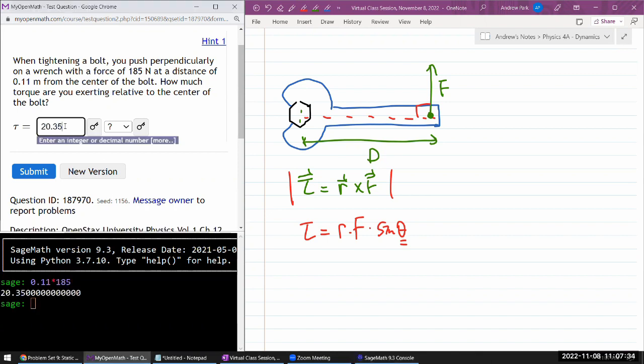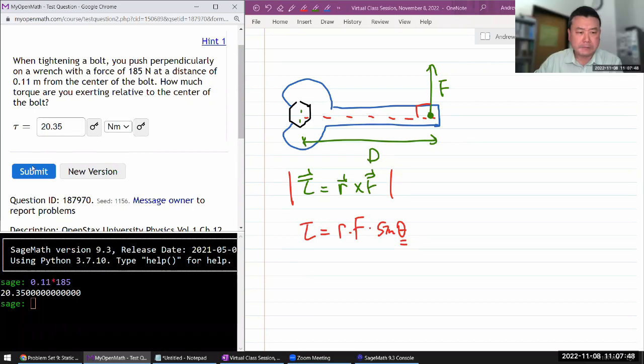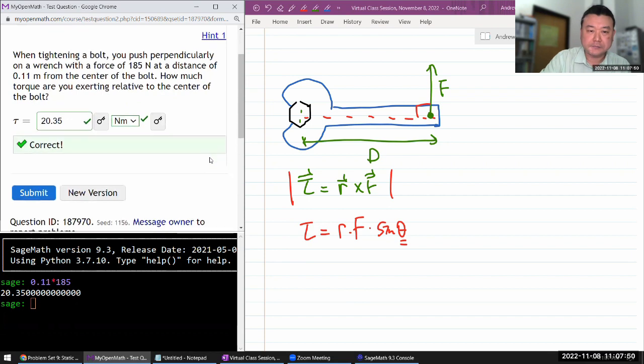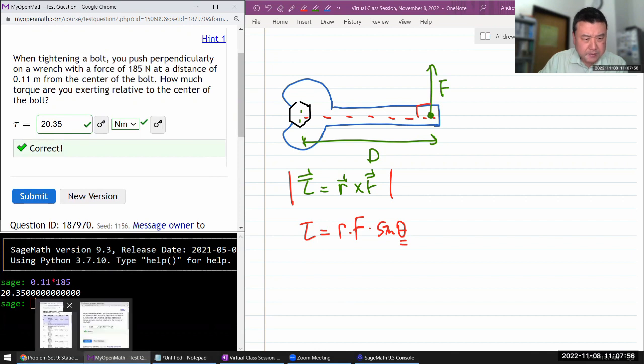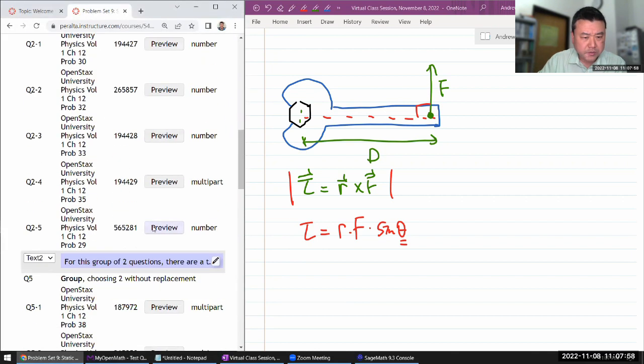I think that's 20.35. In static equilibrium, typical questions tend to involve more forces than that, but this one is simple. And the unit, it's displacement in meters times newtons, so it should be newtons times meters. So that's one question. And the other question, I think, is a similar one, question 2-5.